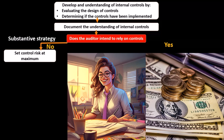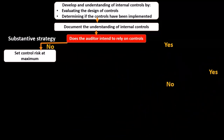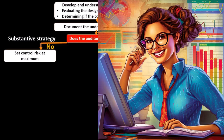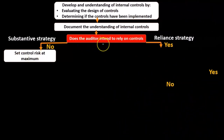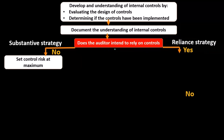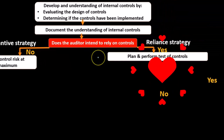Instead of testing internal controls, we go straight to substantive tests — going right to the accounts and testing assertions related to account balances and transactions. If we can rely on the controls, which we likely will for large publicly traded companies, we follow a reliance strategy and plan and perform tests of controls.